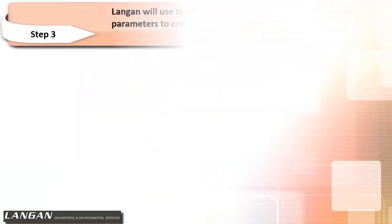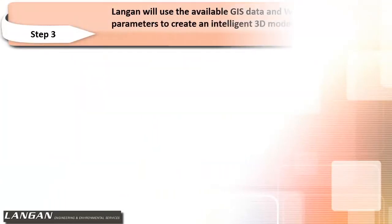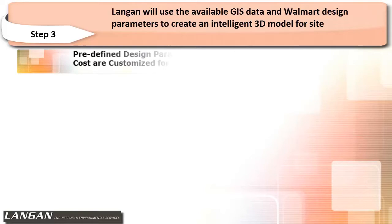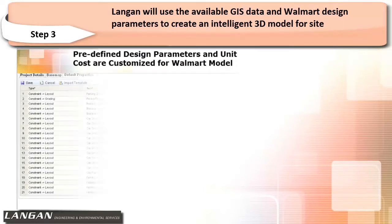In step three, Langan will use the available GIS data and Walmart design parameters to create an intelligent 3D model for the site.